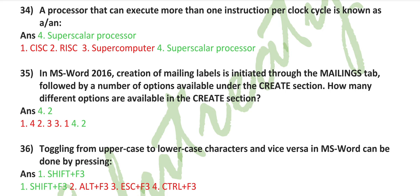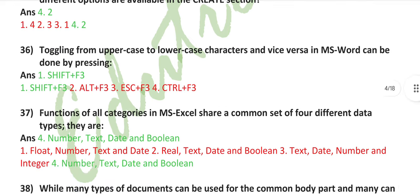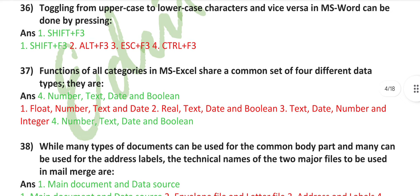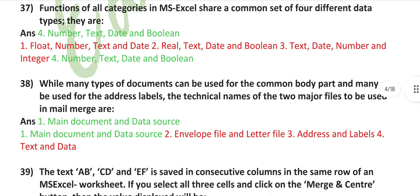In MS Word 2016, creation of mailing labels is initiated through the mailings tab followed by a number of options available under the create section. How many different options are available in the create section? Two. Toggling from uppercase to lowercase characters and vice versa in MS Word can be done by pressing Shift plus F3. All functions of all categories in MS Excel share a common set of four different data types: number, text, date, and boolean.